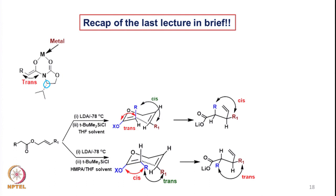We also saw how the aldol products are formed. In the formation of the aldol product, the oxygen-metal bond — which is the boron enolate, where the metal is boron — undergoes intramolecular chelation to make a bicyclic system. When the aldehyde comes in contact with this bicyclic chelated enolate species, the oxygen-boron bond breaks and the oxygen of the aldehyde comes in contact with the boron. Therefore, we see the Zimmerman-Traxler transition state, and then the aldol product is formed.